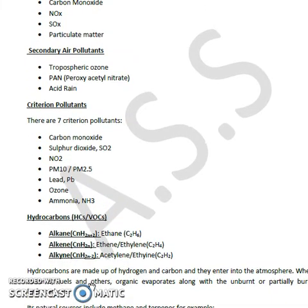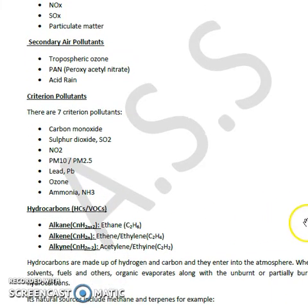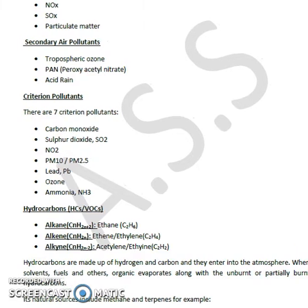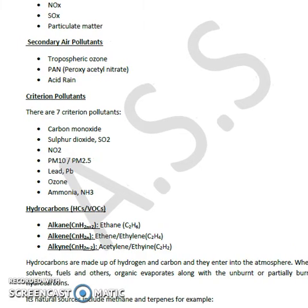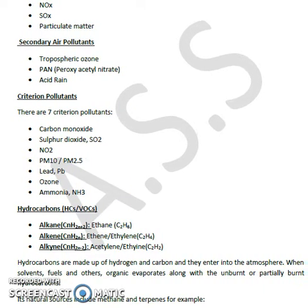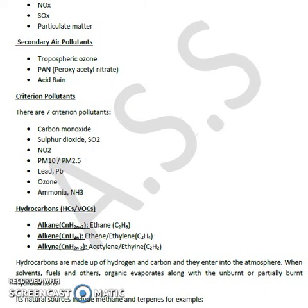Now we will be discussing something about hydrocarbons or VOCs. They can be further categorized into three categories. One: alkanes, having a general formula CnH2n+2. For example, ethane, which is C2H6.